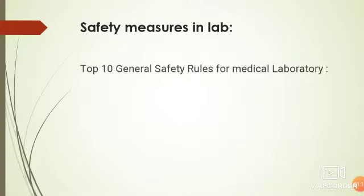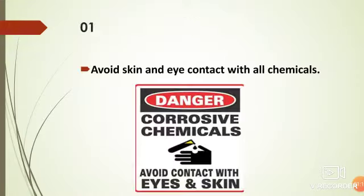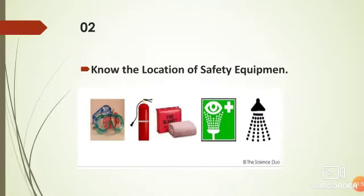Now, there are ten general safety rules for the medical laboratory. Let's discuss about all these one by one. First of all, avoid contact with eye and skin, because it may result in local reactions such as burn or rash, or absorption into the bloodstream. Absorption into the bloodstream may allow chemicals to cause toxic effects on other parts of the body. So we should take care that no chemicals come in contact with our eyes and skin while working in the lab.